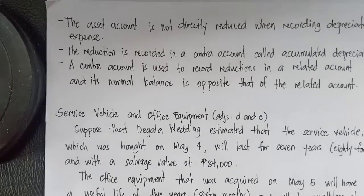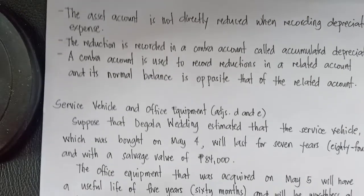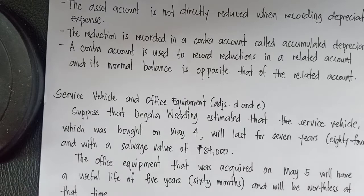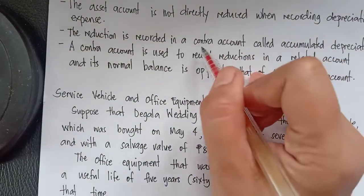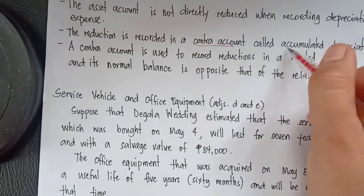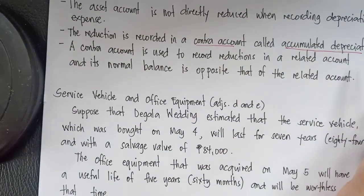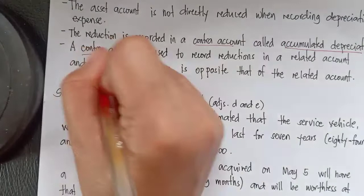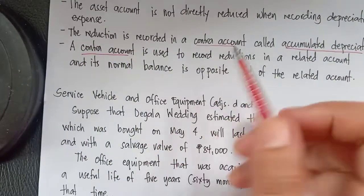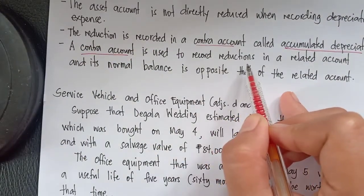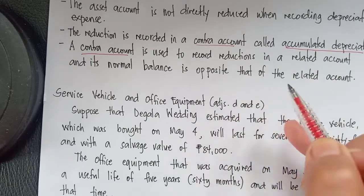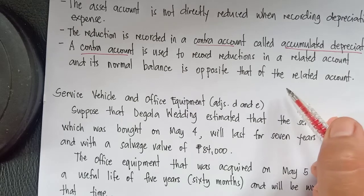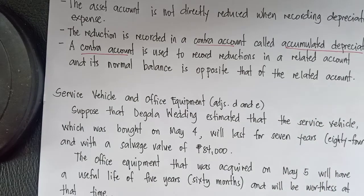The asset account is not directly reduced when recording depreciation expense. Instead, the reduction is recorded in a contra-account called accumulated depreciation. A contra-account is used to record reductions in a related account, and its normal balance is opposite that of the related account.